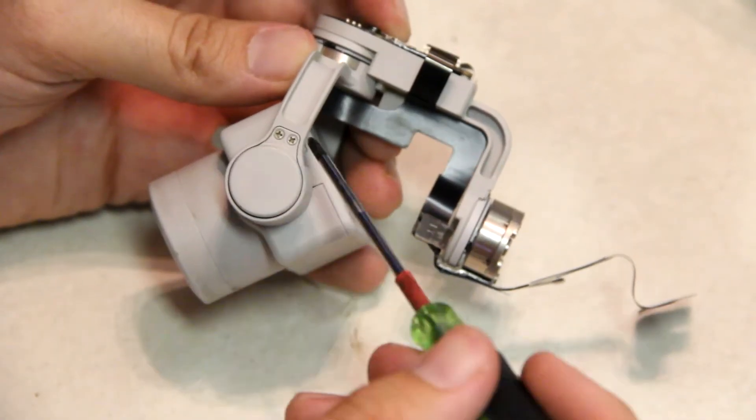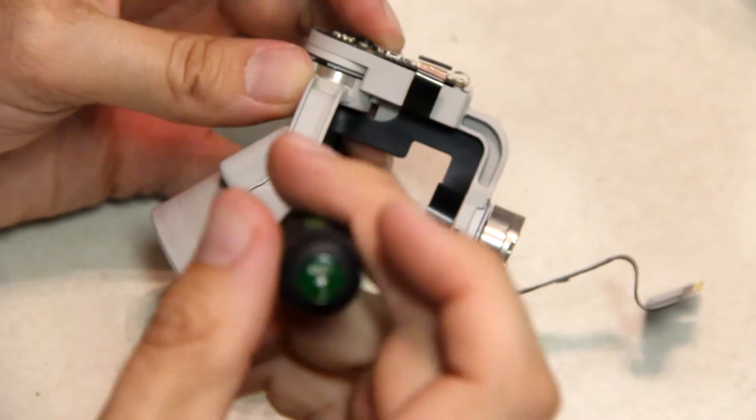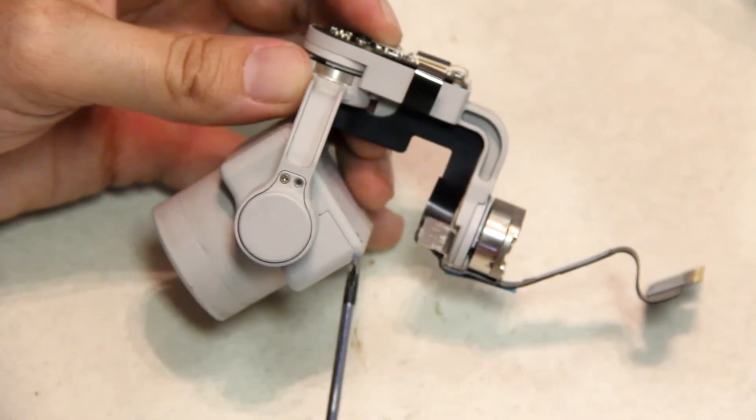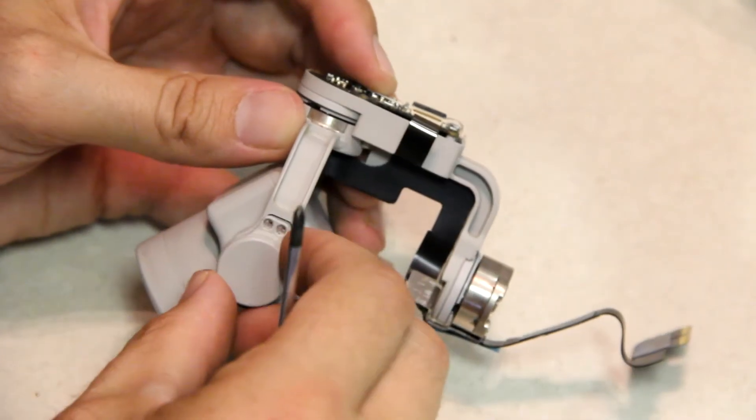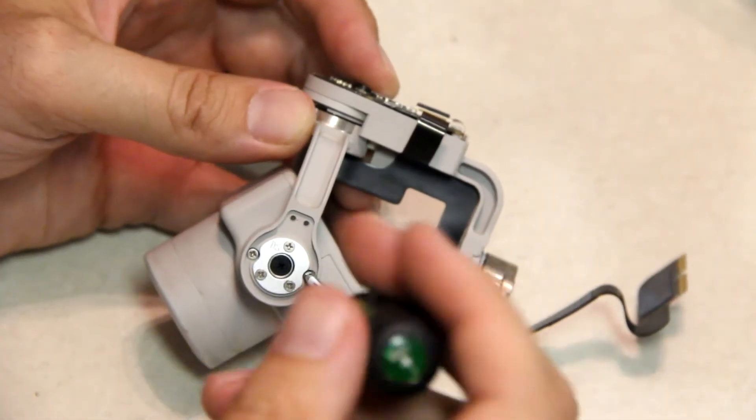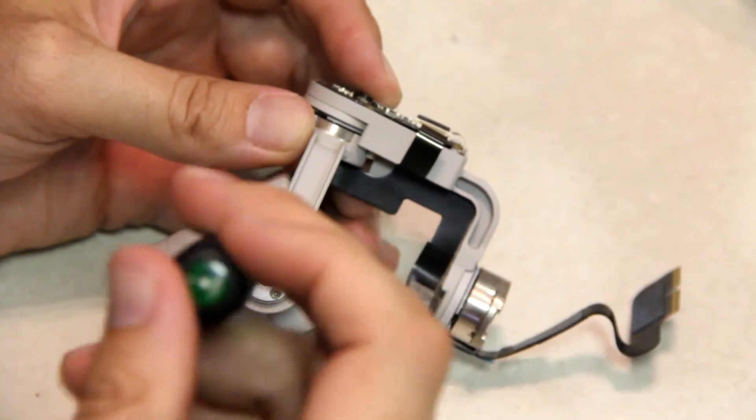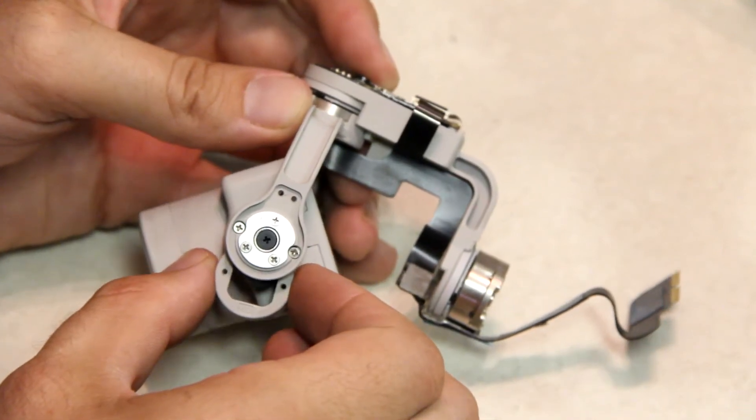Next, take your Phillips head screwdriver and remove these two screws. Very tiny. Take the cover off and you want to remove these two screws on the sides.